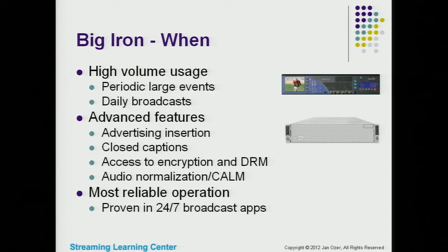This category offers advanced features you can't get elsewhere. If you're a broadcaster, you now have to support closed captioning for anything shown on TV — not many encoding tools support that level of closed captioning. If you're monetizing video with advertising insertion, many cheaper encoders don't support this, so you may need to spend more on a big iron encoder. Same applies for encryption, DRM, audio normalization, and COMAC.